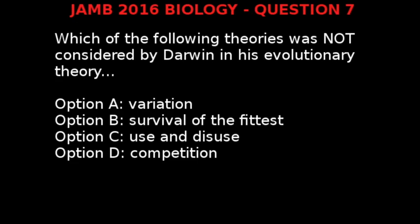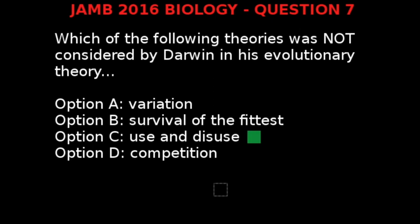JAM 2016 Biology Question 7. Which of the following theories was not considered by Darwin in his evolutionary theory? Option A: Variation. Option B: Survival of the fittest. Option C: Use and disuse. Option D: Competition. The correct answer is Option C, Use and disuse. The theory of use and disuse is credited to Lamarck, while variation, survival of the fittest, and competition are credited to Charles Darwin.